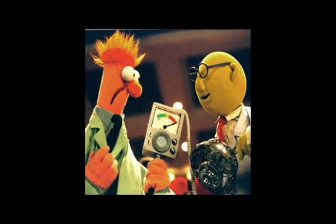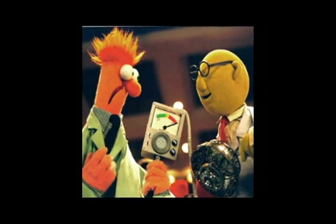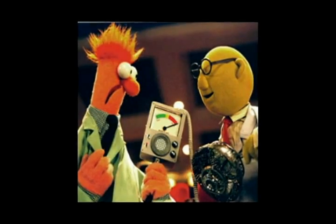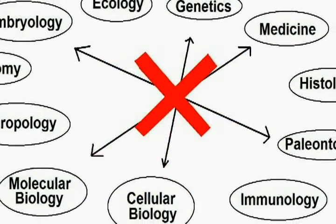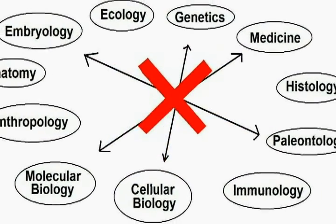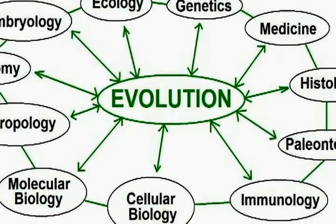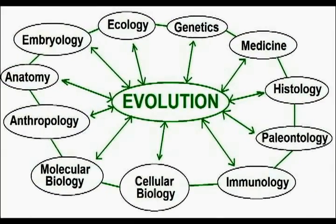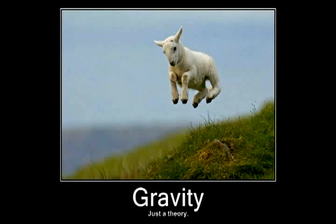Despite public opinion to the contrary, the scientific debate as to whether or not evolution happens ended nearly a hundred years ago. Now, evolution is known as the unifying theory of biology simply because it unites the disciplines. What this means is that advancements gained in one field can be applied to others. It's also worth noting that the theory of evolution isn't about whether or not evolution occurs — that's an undisputable fact.